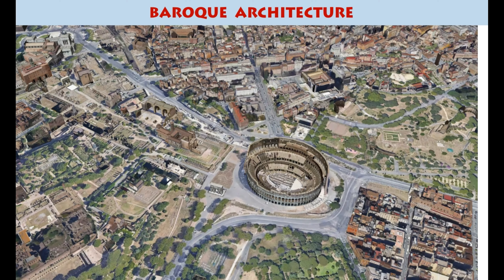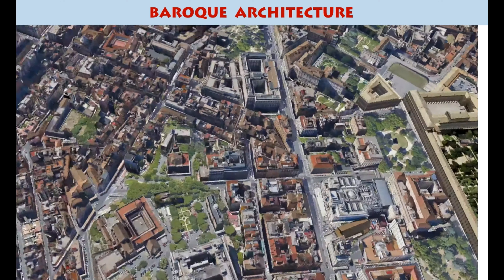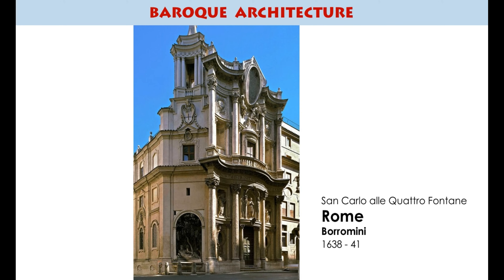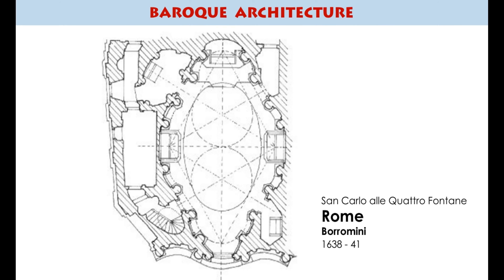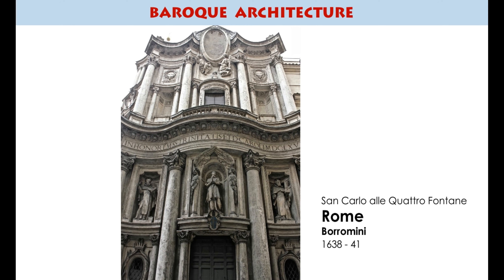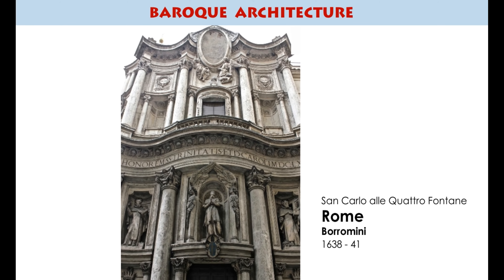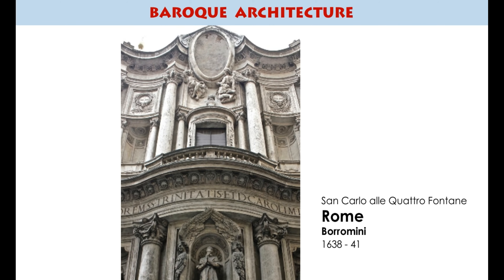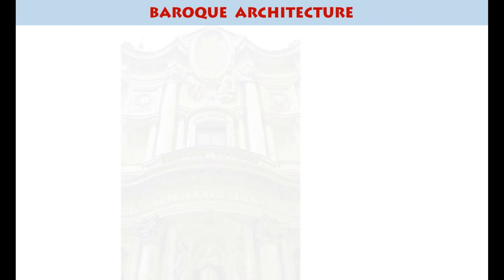Perhaps one of the best architects whose work displays all these elements is Borromini, working in Rome around the beginning of the 17th century. Here's one of his most famous churches — the Quattro Fontane in Rome, right in the center of the city and quite a small church. Exquisitely designed: just looking at the plan shows how many different shapes and curves are involved. Looking at the facade, you can see it's not a simple box at all — every possible curve has been exploited, with various shapes within shapes, convex and concave. This is a real virtuoso performance by somebody who knew exactly what he was doing with these elements.